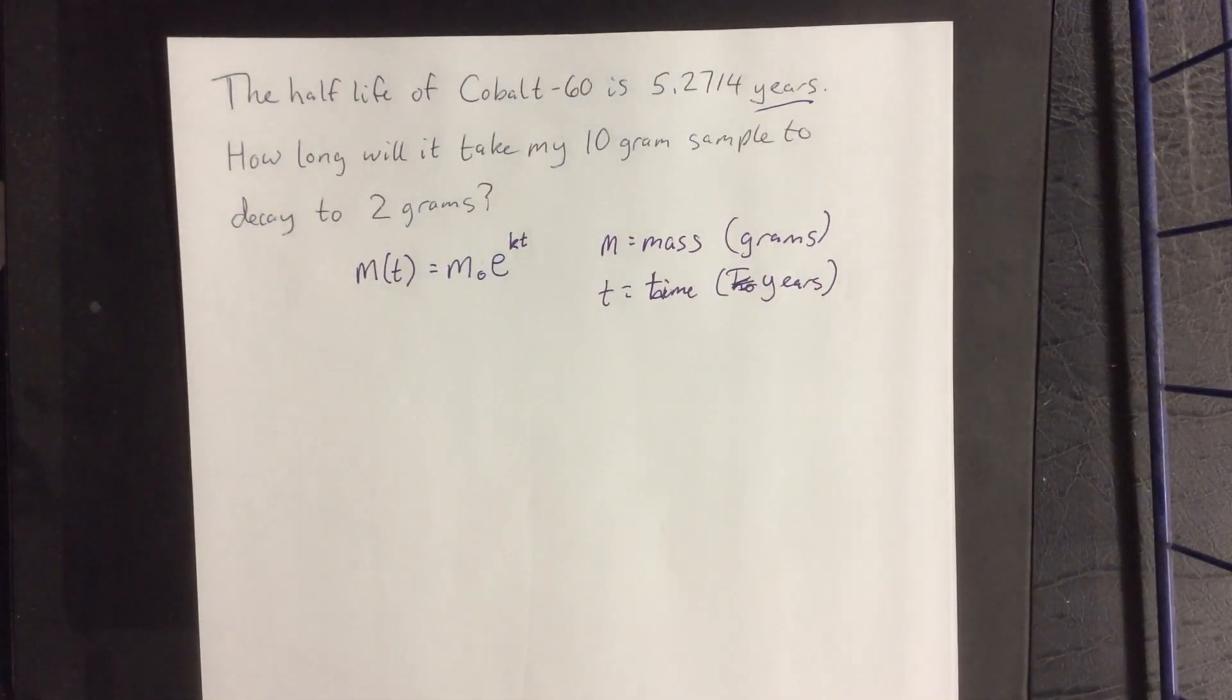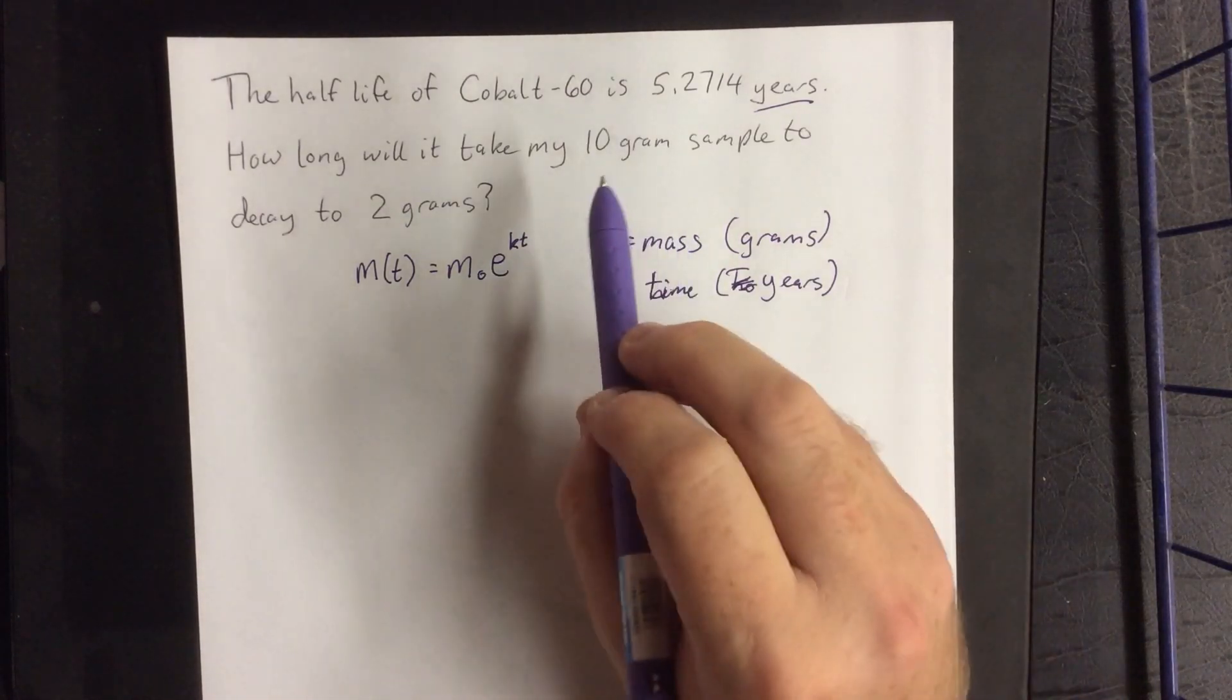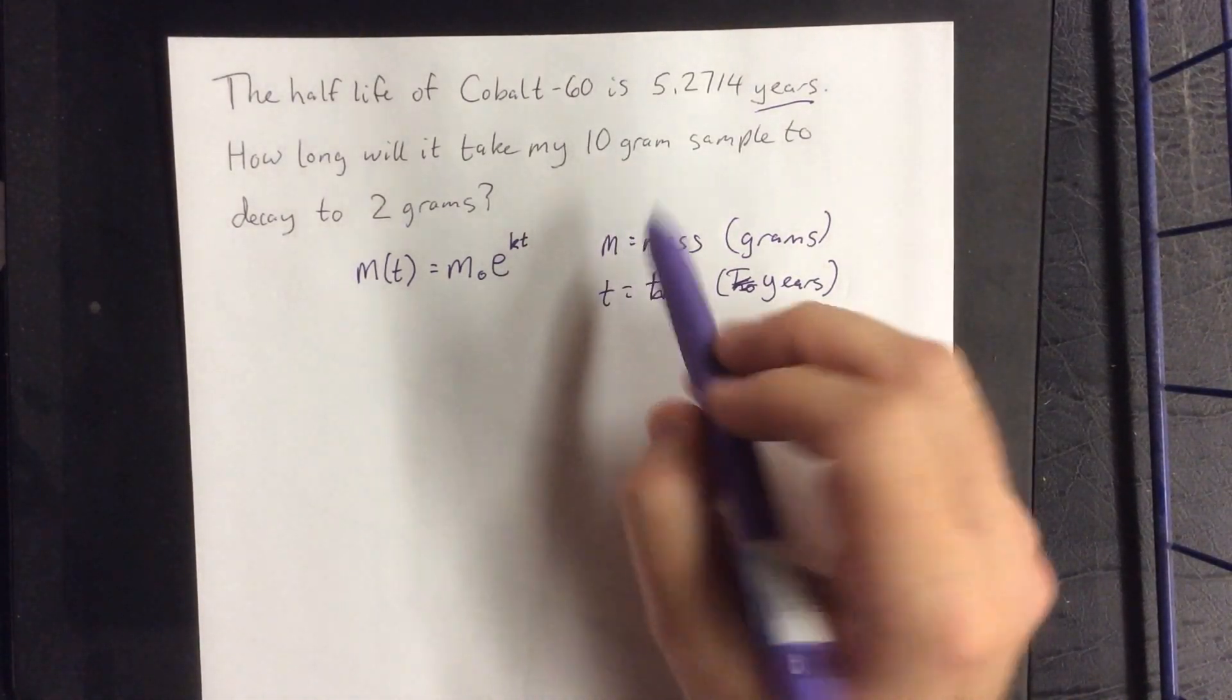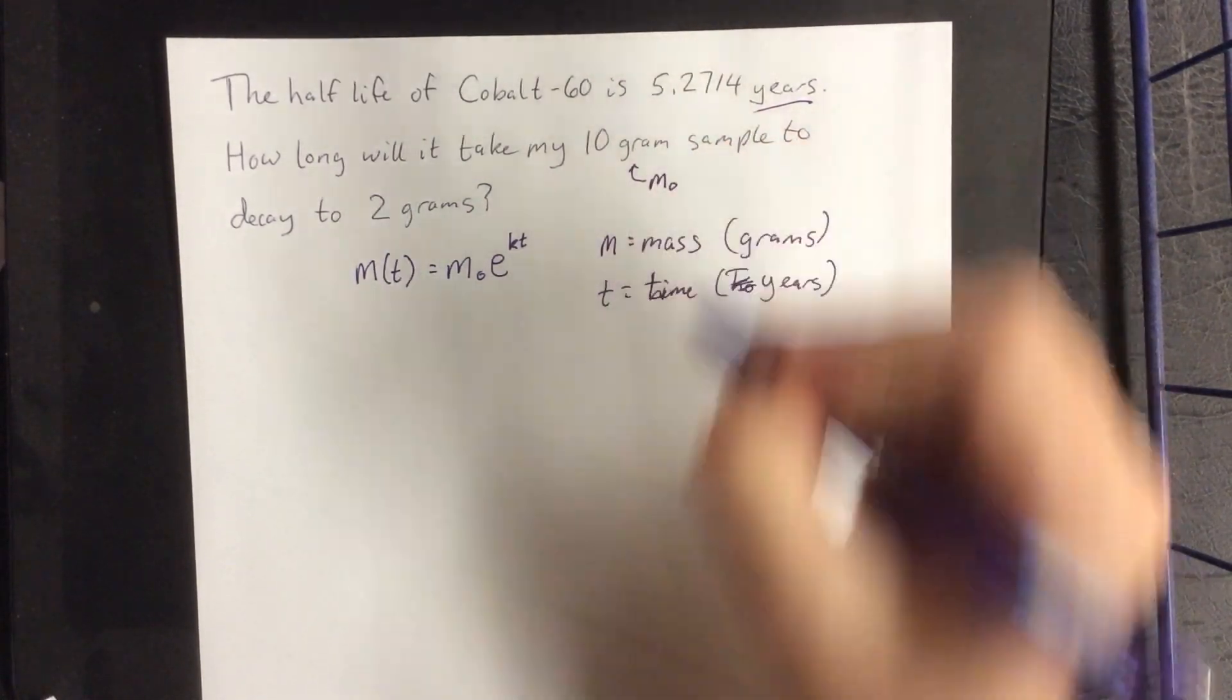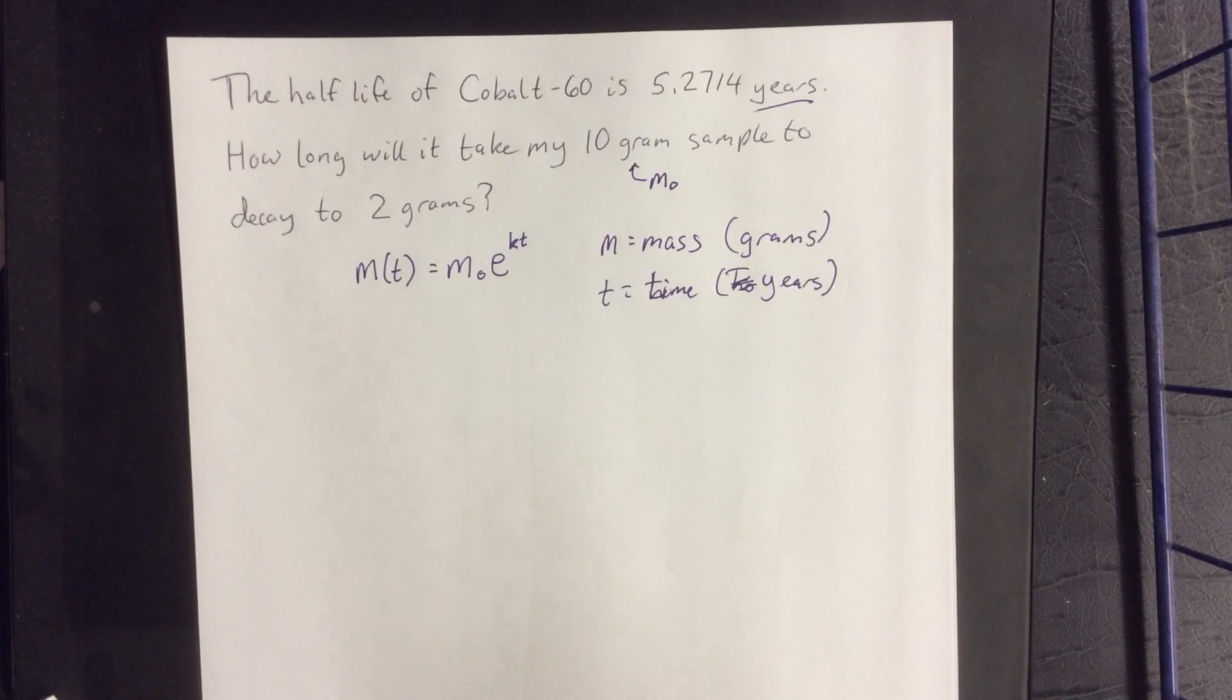Off to a great start, fantastic. All right, so with those things in mind, when I reread the problem, what I notice here is that we're starting with a 10 gram sample. This is going to be referring to the initial amount of the substance, so we'll refer to this as m-naught.